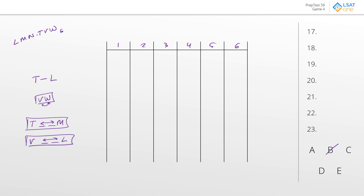V and W have to be consecutive: A has them consecutive, C has them consecutive, D does not — they are separated by Montreal — so eliminate D. E also has V and W consecutive. Next, T and M have to have exactly two spaces between them. Answer A has that, C has that (with N and L in between), but E has only one city in between, so eliminate E.